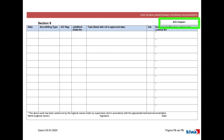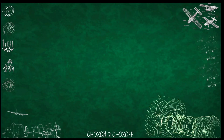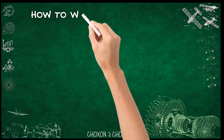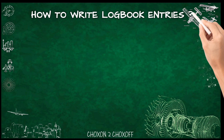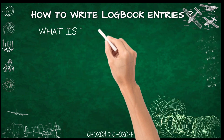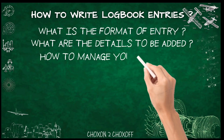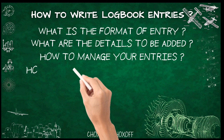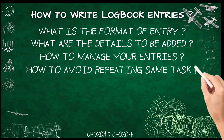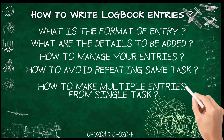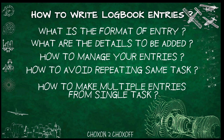There are also some blank pages without any ATA chapter — these can be printed and added to any chapter where you need more than one page. That's all from the KIWA logbook. In the next video we will discuss how to write logbook entries: the format, the details needed, how to manage your entries, how to avoid repetition of the same tasks, and how to make multiple entries from a single task card. Please support us by subscribing to the channel. Thank you for watching.